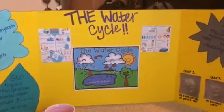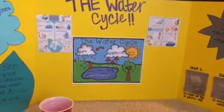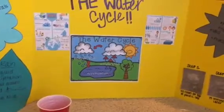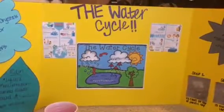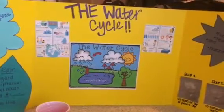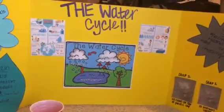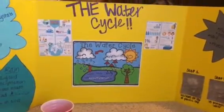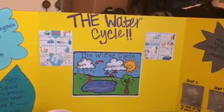I want to talk a little bit more about what I have in the middle of my trifold, which is the water cycle. Each transition in the water cycle makes up four cycles: evaporation, condensation, precipitation, and accumulation, which is also better known as collection.